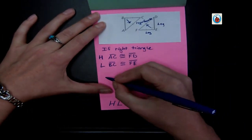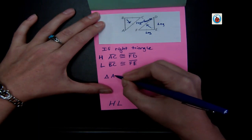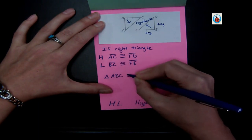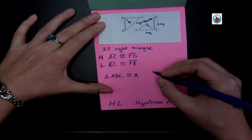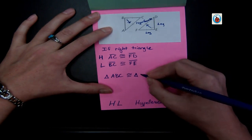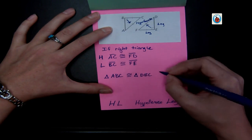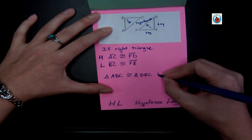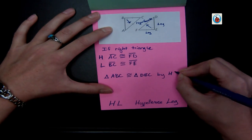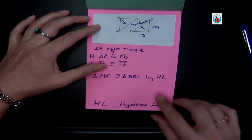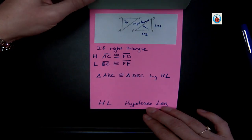And so we have triangle ABC is congruent to triangle DFE by hypotenuse leg. Okay, and that's your foldable. So now you can use it to help you work through your packet.